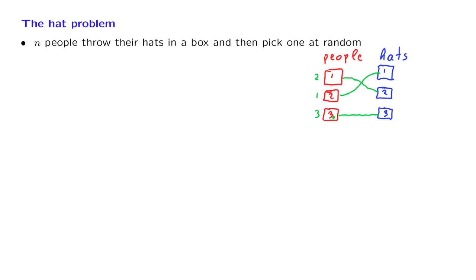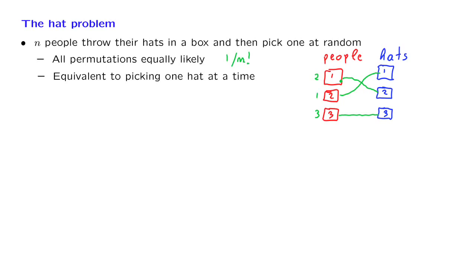In particular, we have n factorial possible outcomes — this is the number of possible permutations. What does it mean to pick hats at random? One interpretation is that every permutation is equally likely, so each permutation has probability 1 over n factorial. There is another way of describing the model: person 1 gets a hat at random out of the three available, then person 2 gets a hat at random out of the remaining hats, then person 3 gets the remaining hat. Each time, all available hats are equally likely to be picked.